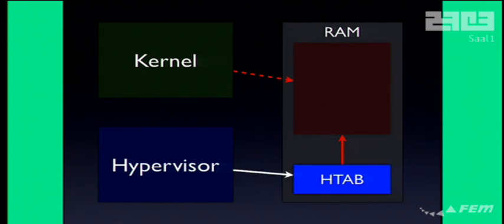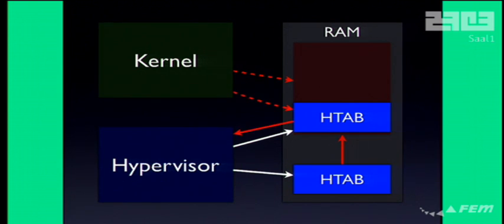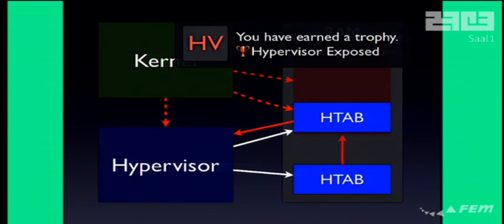All you have to do is ask the hypervisor to create a new virtual address space — a new page table. If you're lucky, it ends up in that freed chunk of RAM, and suddenly you have access to the page table and can read and write from it. If you can write to the page table, you can map the hypervisor. If you can map the hypervisor, you can do anything you want in hypervisor mode. So that gets us hypervisor code execution.